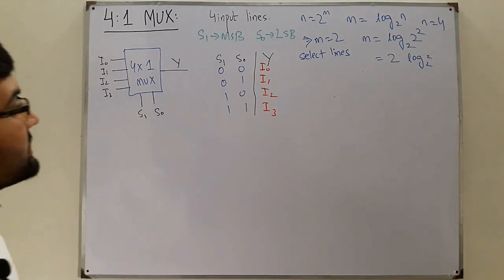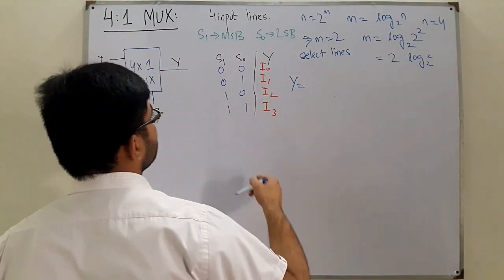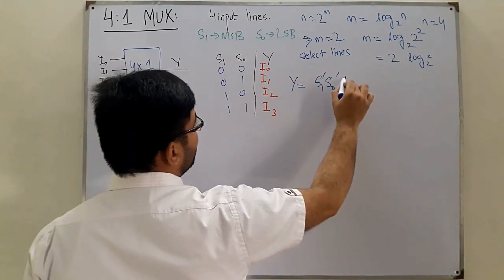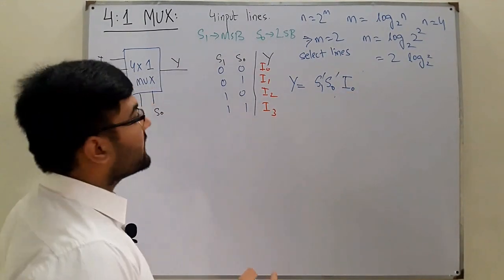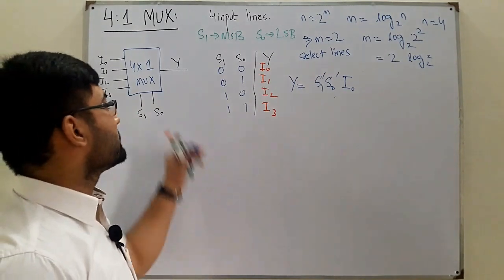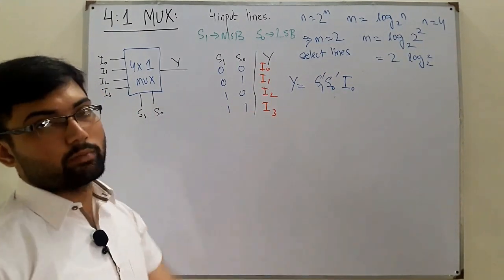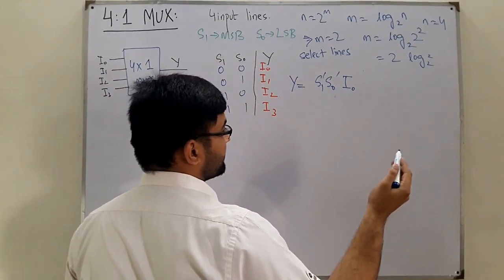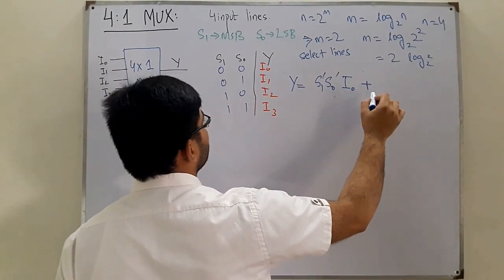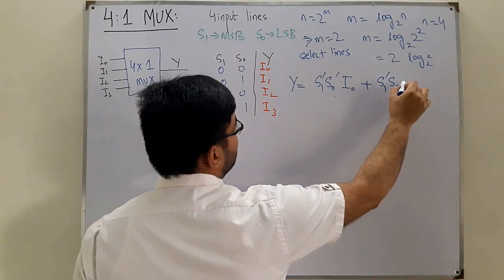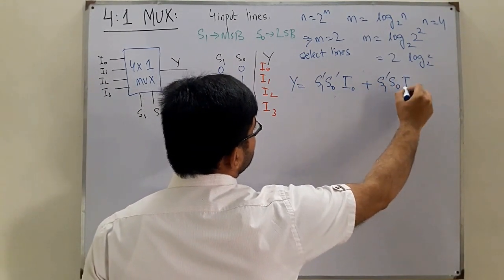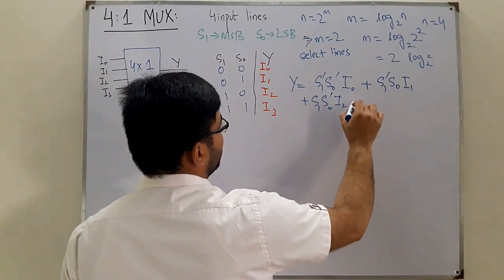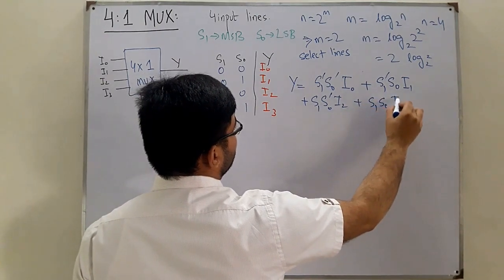Writing the Boolean equation: y equals (s1' · s0' · i0) + (s1' · s0 · i1) + (s1 · s0' · i2) + (s1 · s0 · i3). The select lines that are low are complemented, while the high ones are not.